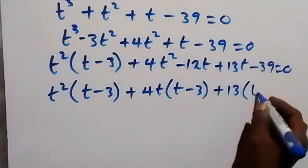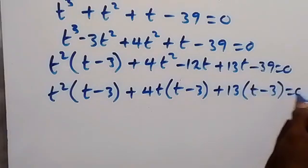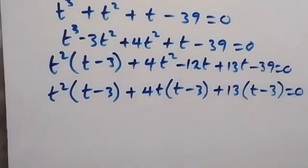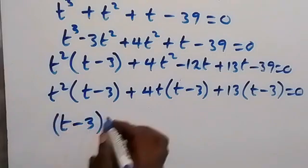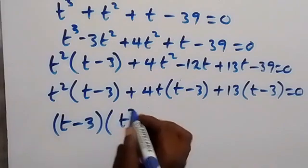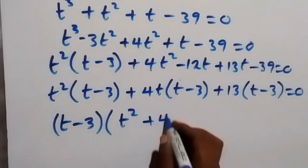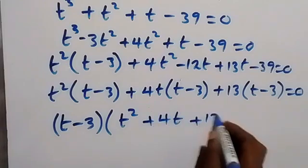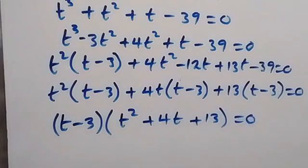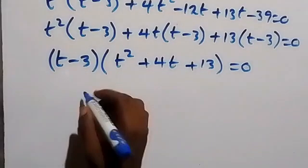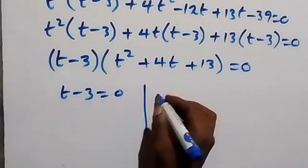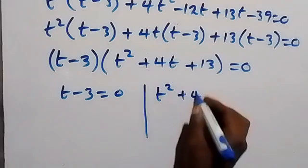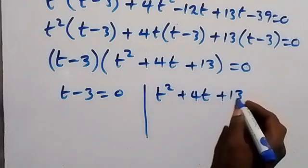We have t minus 3 common throughout, so we factor that out. This gives us t minus 3 times the bracket t squared plus 4t plus 13, equals zero. We now have two possible cases: t minus 3 equals zero, or t squared plus 4t plus 13 equals zero.